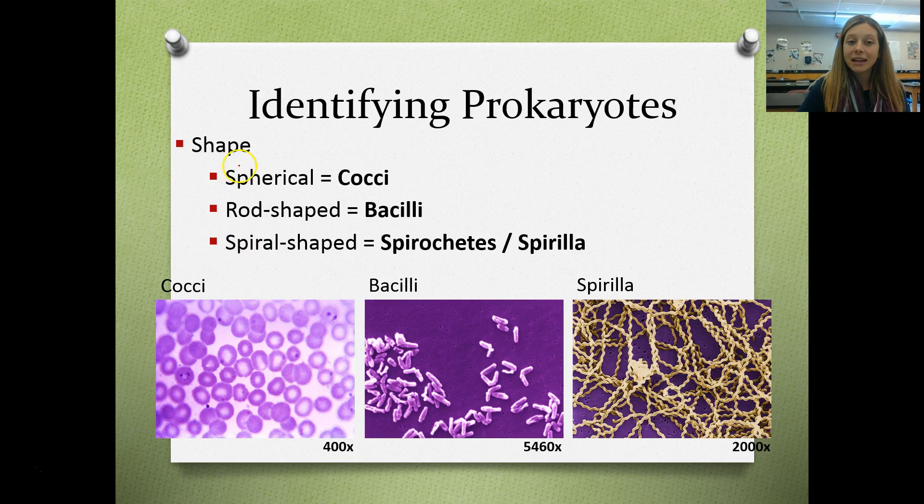Bacteria with a spherical shape are called cocci. When bacteria are rod-shaped, that is bacilli. When bacteria are spiral-shaped, you'll hear it as either spirochetes or spirilla — I'll almost always use spirilla, but you should know both terms. You can see circle-shaped bacteria, rod or oval-shaped bacteria, and spiral-shaped bacteria in the examples shown.